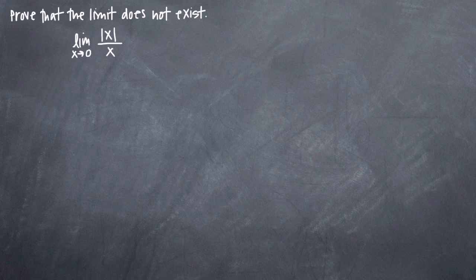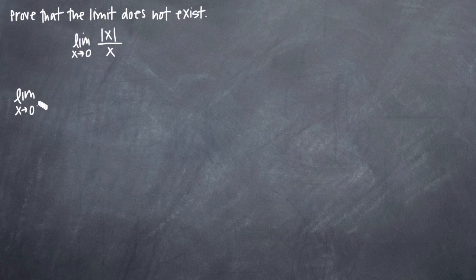So what we'll do is start with the left-hand limit, make sure that we've got one, then make sure that we've got a right-hand limit, and then make sure that they are equal to one another. If we can't pass any of those steps, then we'll have proven that the limit does not exist. So let's start with the left-hand limit of this function — the limit as x approaches zero from the negative or left-hand side of the absolute value of x divided by x.